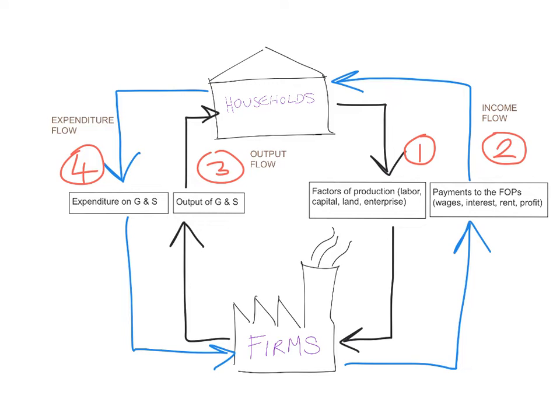In an earlier video in this series, I spoke about how households provide firms with the factors of production, and then the firms, in return, pay those payments to the factors of production — wages, interest, rent, and profit. This is the income flow.